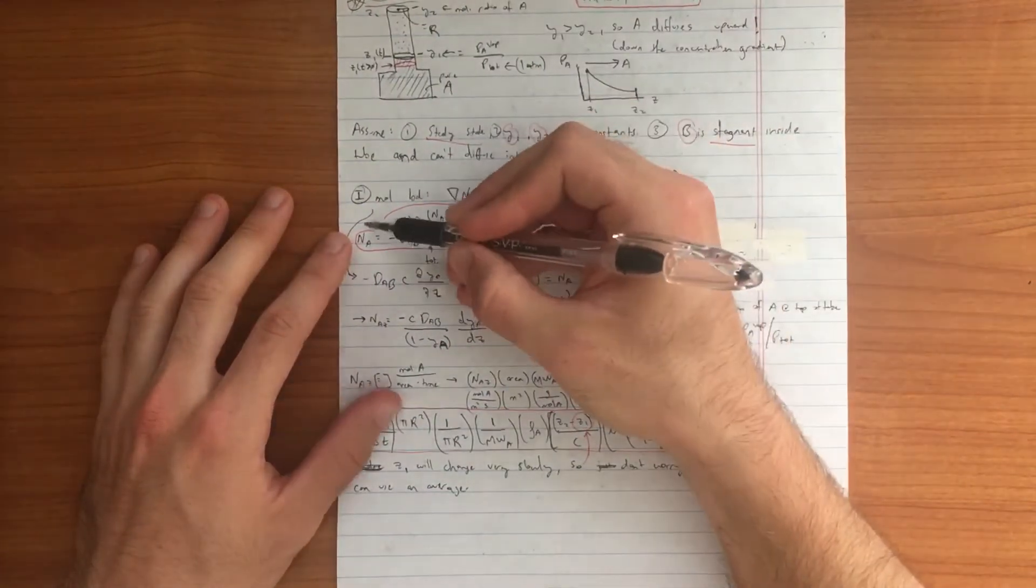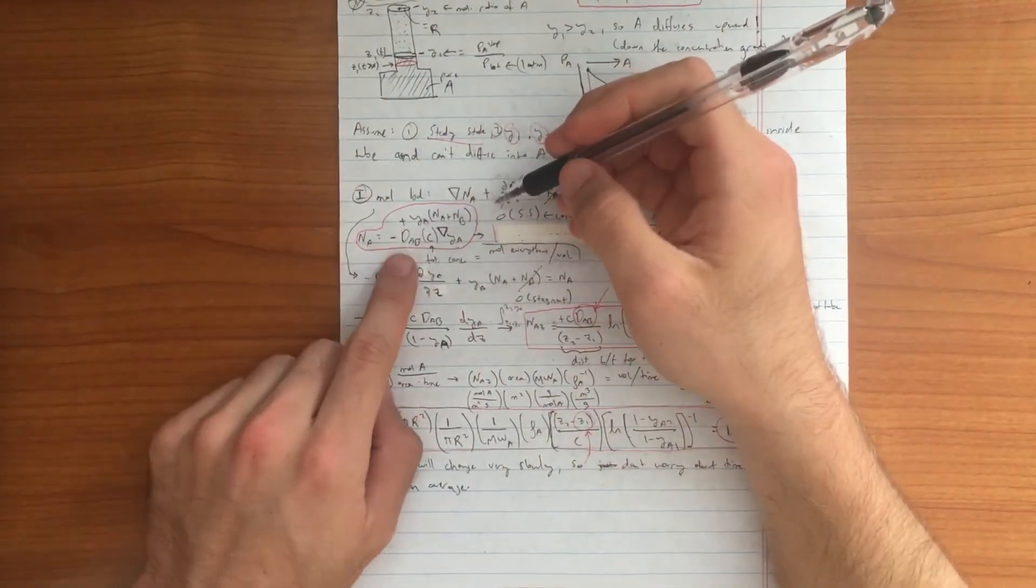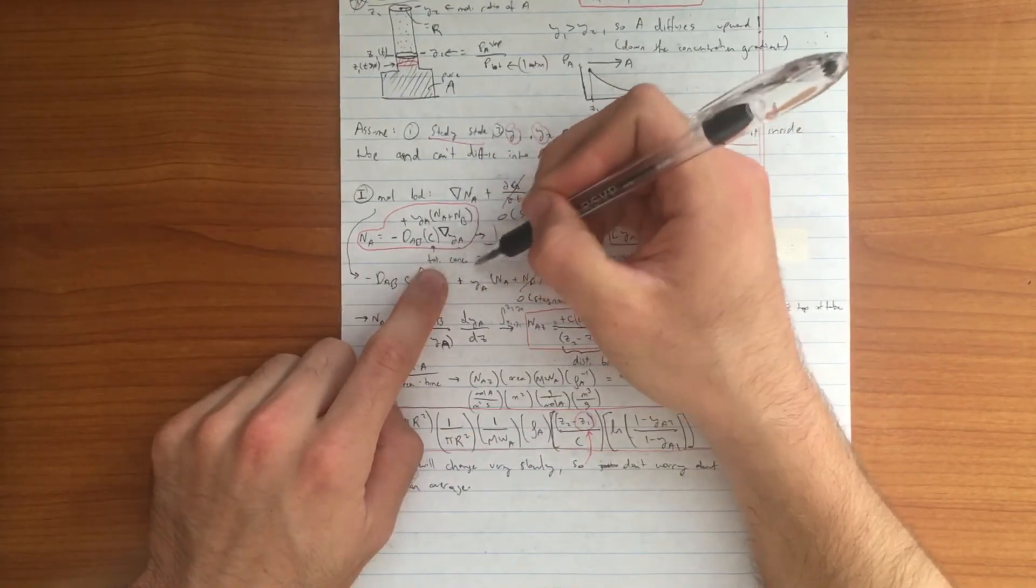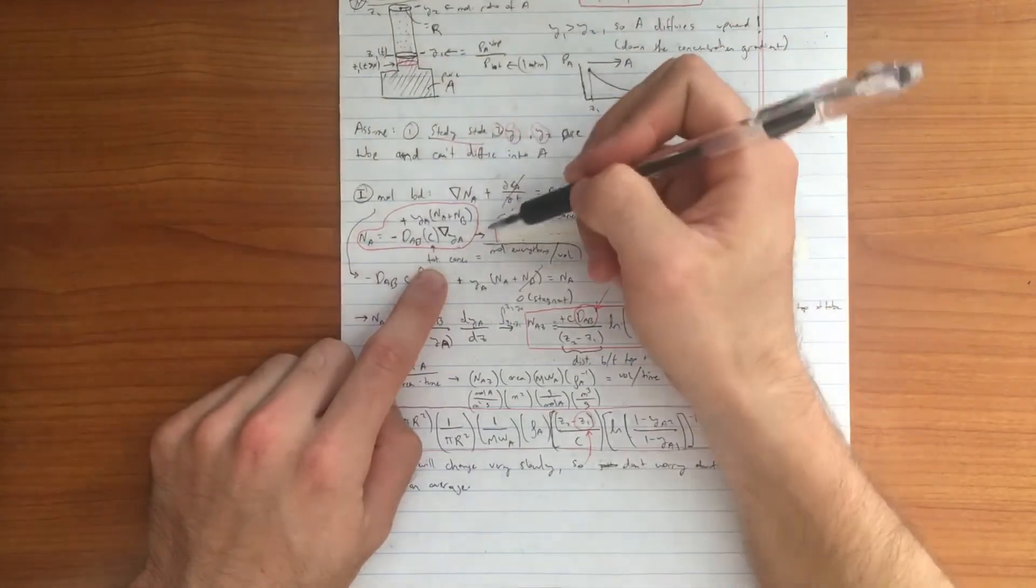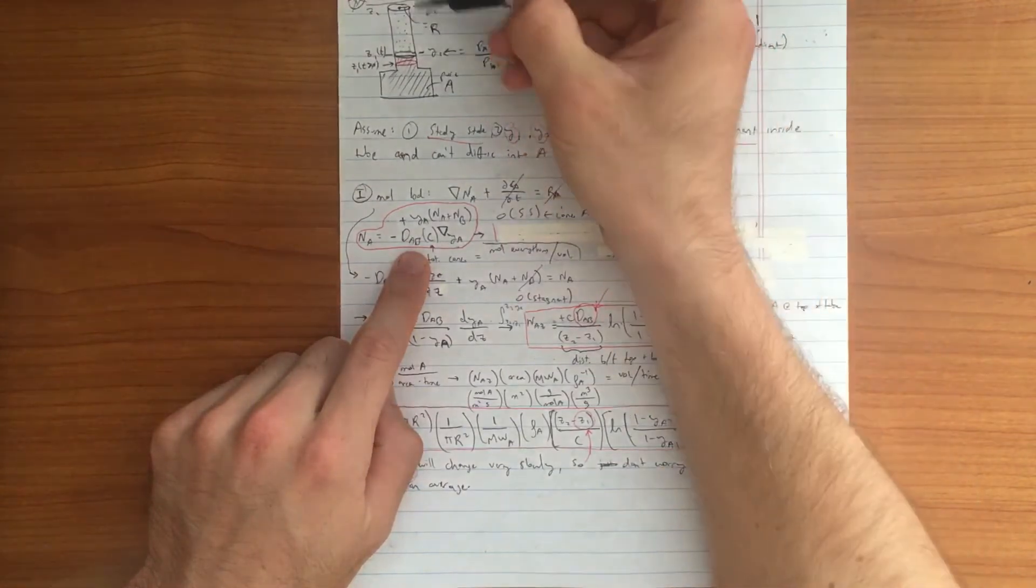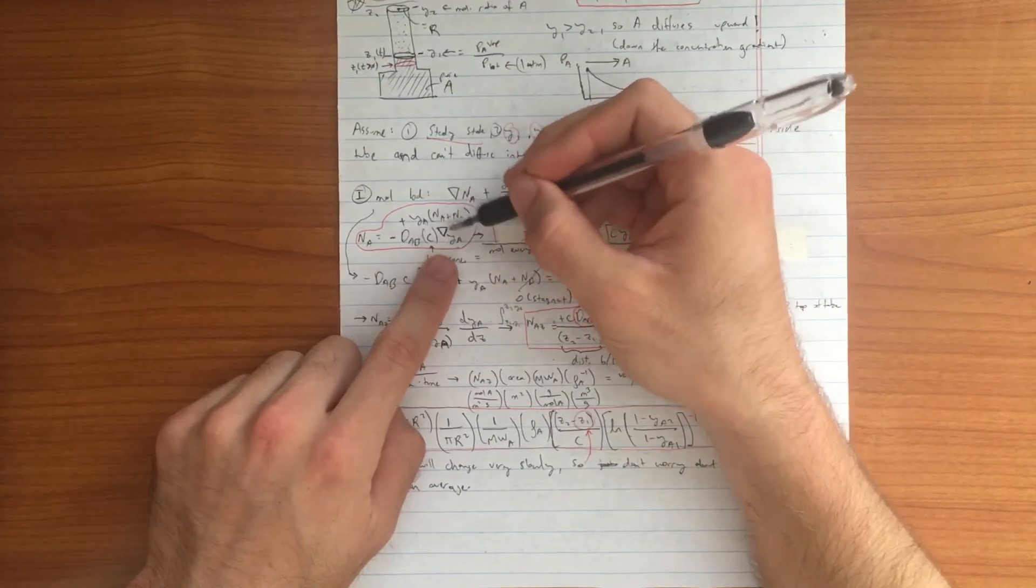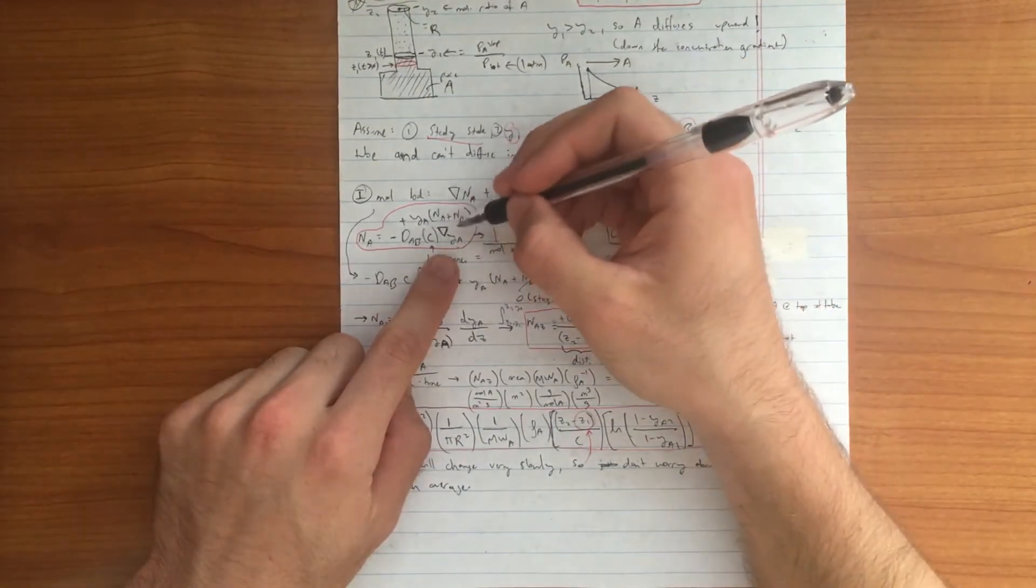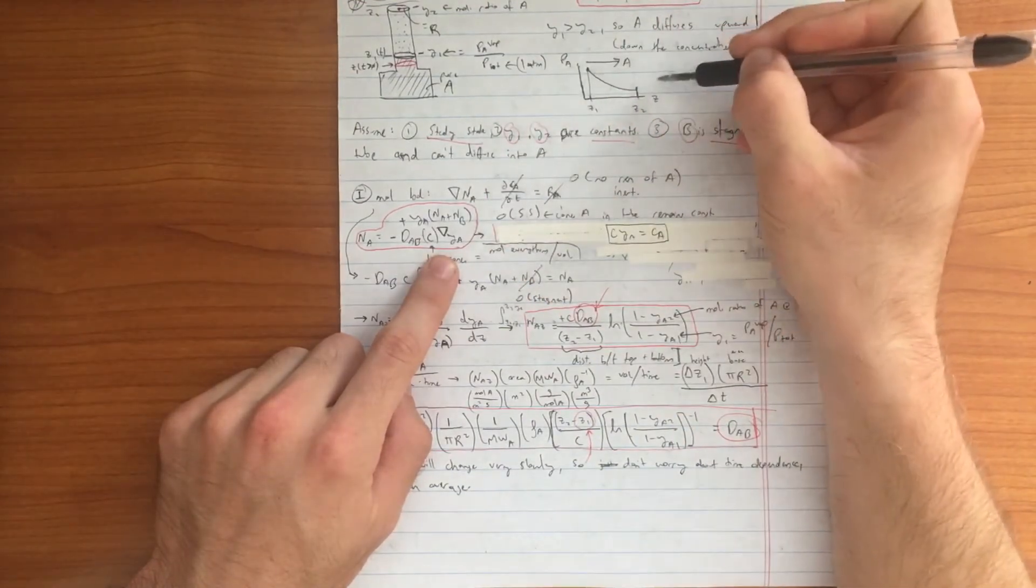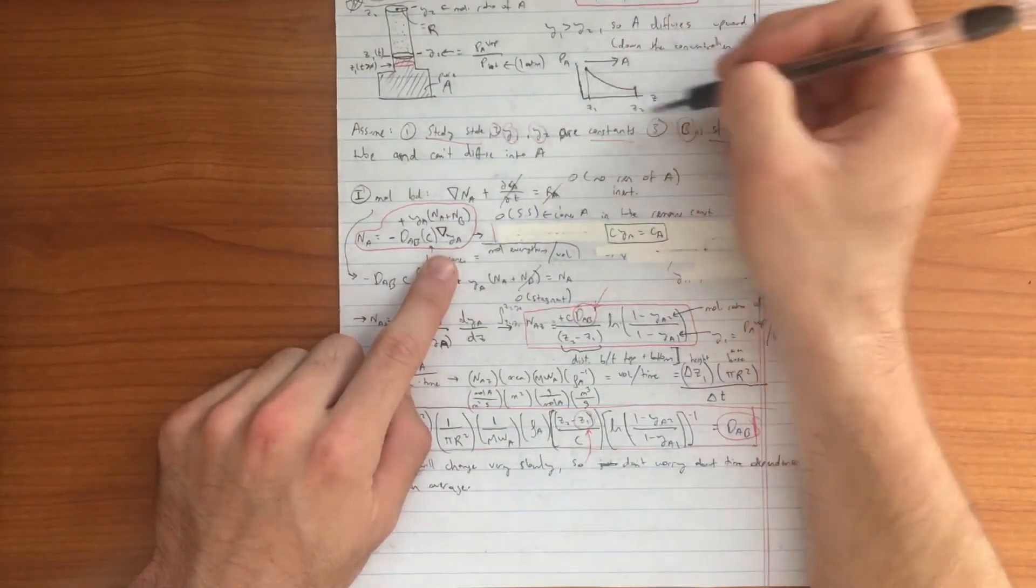The next step is to analyze what the flux of A really is. Generically the flux of A is equal to the diffusivity, which is what we want to calculate, times C, the total concentration of all species present in our control volume. To calculate C, you would sum up the number of moles of every species you have present and then divide that by the total volume in your control volume times the gradient of YA. This is the concentration profile of YA, which would be proportional to the partial pressure of A within your control volume along the Z direction.